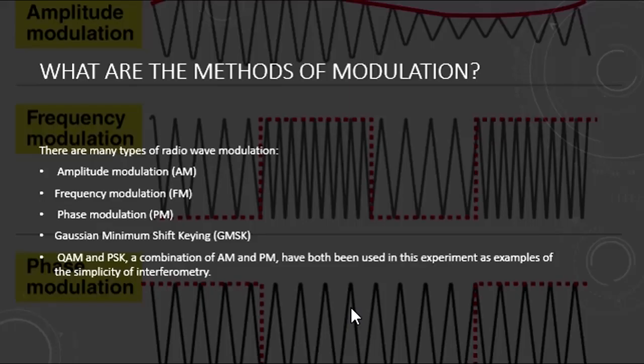All right, here are some methods that the scientists use. I will explain these in further detail later. First, we have amplitude modulation AM, frequency modulation FM, phase modulation PM, and there are also more complex ones which use a mix of the first three, such as Gaussian minimum shift keying, and others like QAM, quadrature amplitude modulation, and PSK, phase shift keying. These are a combination of AM, amplitude modulation, and PM, phase modulation. They have both been used in this study as examples of the simplicity of interferometry.